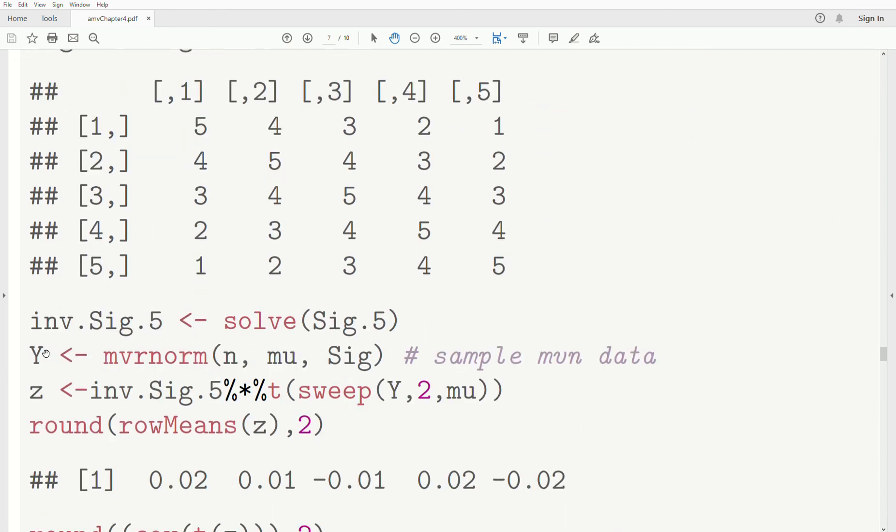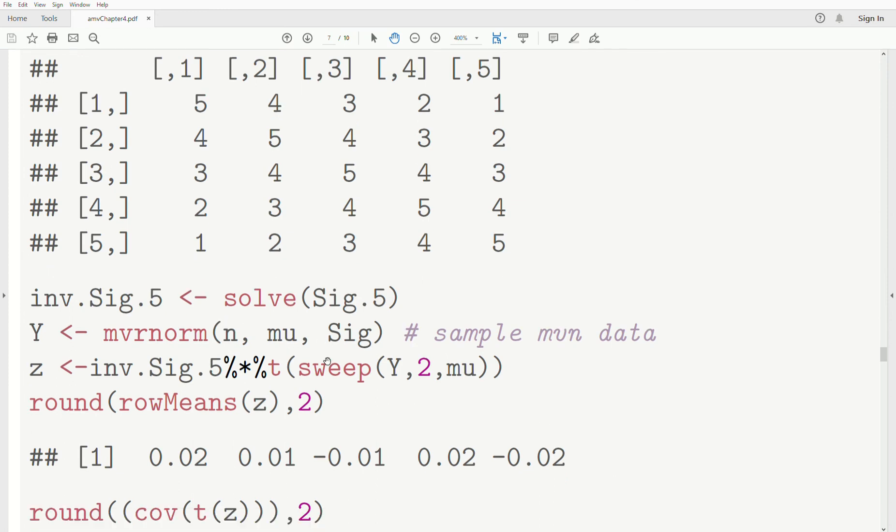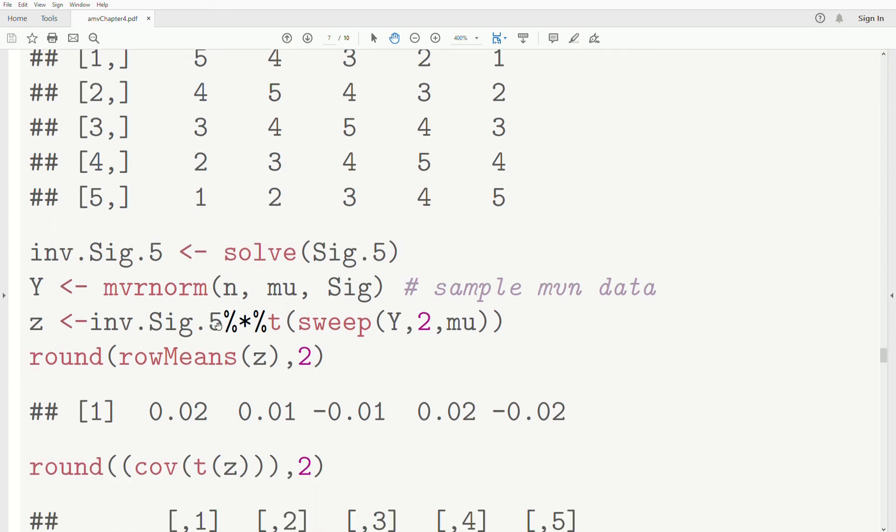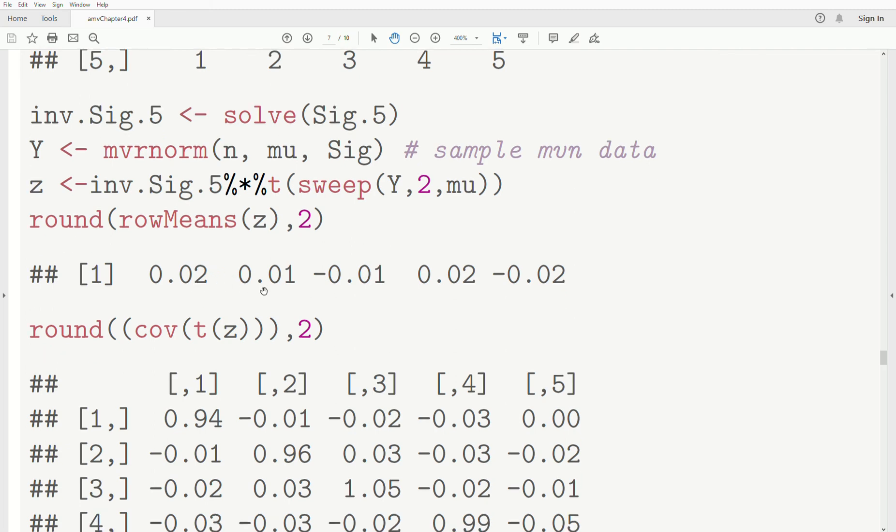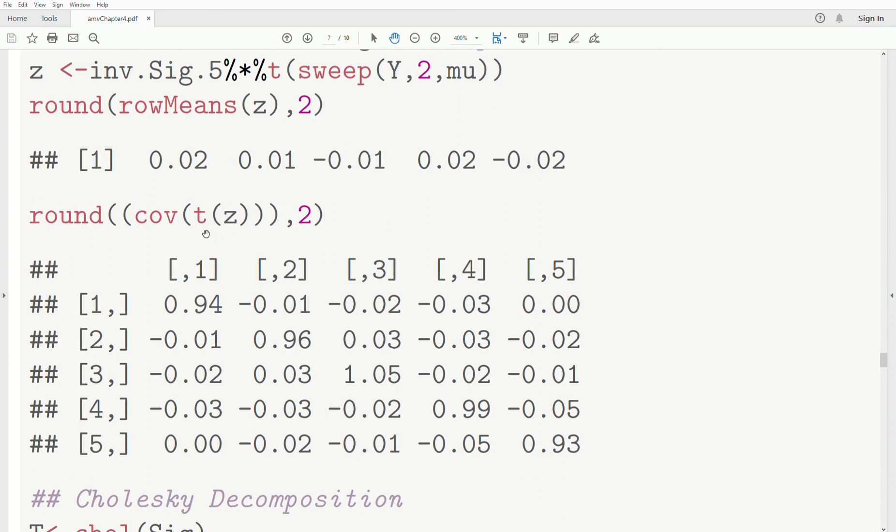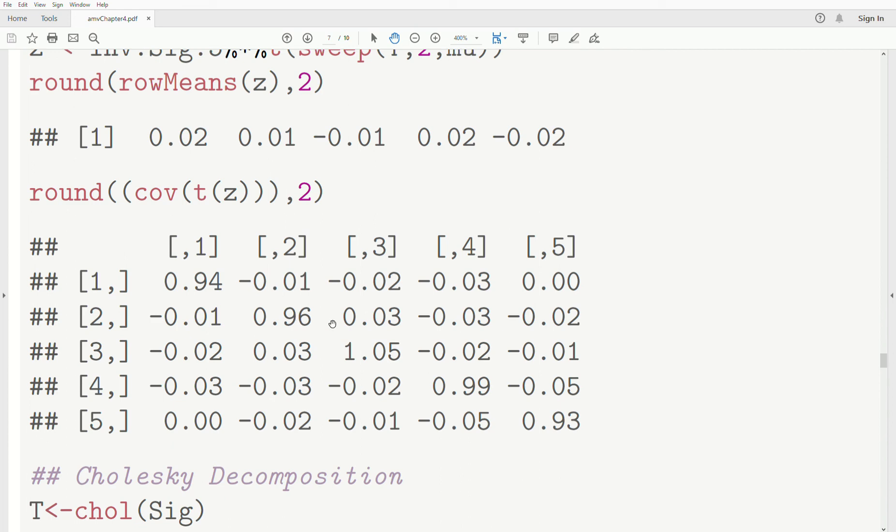Now we take the inverse of it because we need it in our transformation. We generate a multivariate normal sample. We take the inverse square root matrix times this Y minus mu, which is the sweep function. We look at the row means, and they're really close to zero, right? So each variable has a mean roughly zero. The covariance matrix is this. Now it's roughly ones down the diagonal and values pretty close to zero in the off diagonal. So it does seem like this transformation worked.